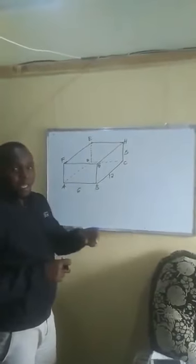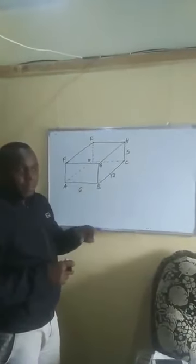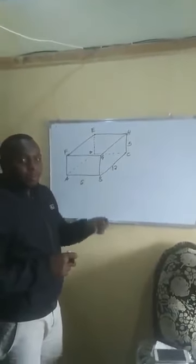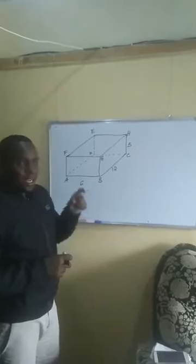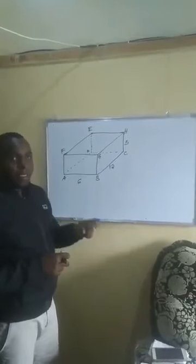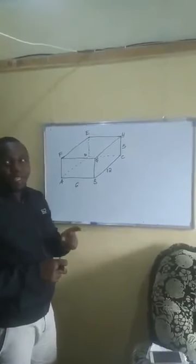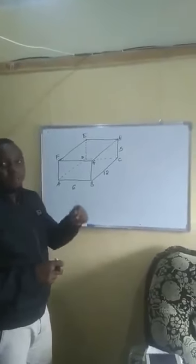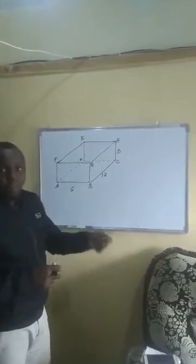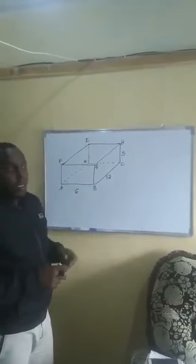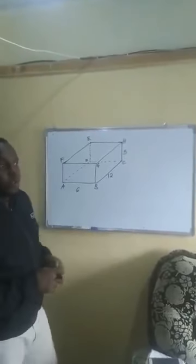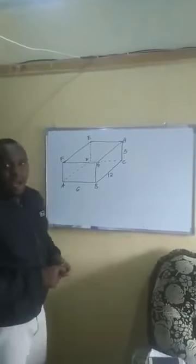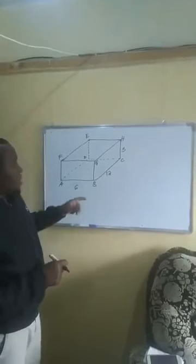I want us to get another angle. Remember, we are getting an angle between a line and a plane, and we said that the angle between a line and a plane is the angle between that line and its projection on the plane. Now we're going to do another angle here.